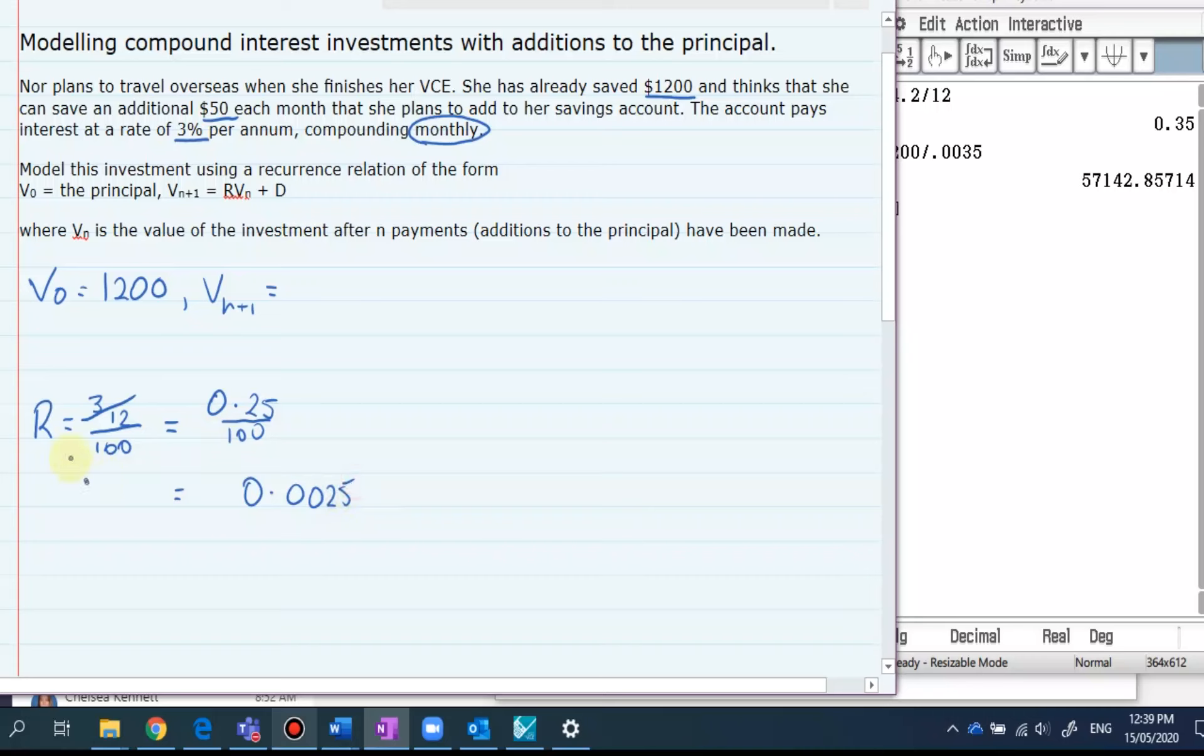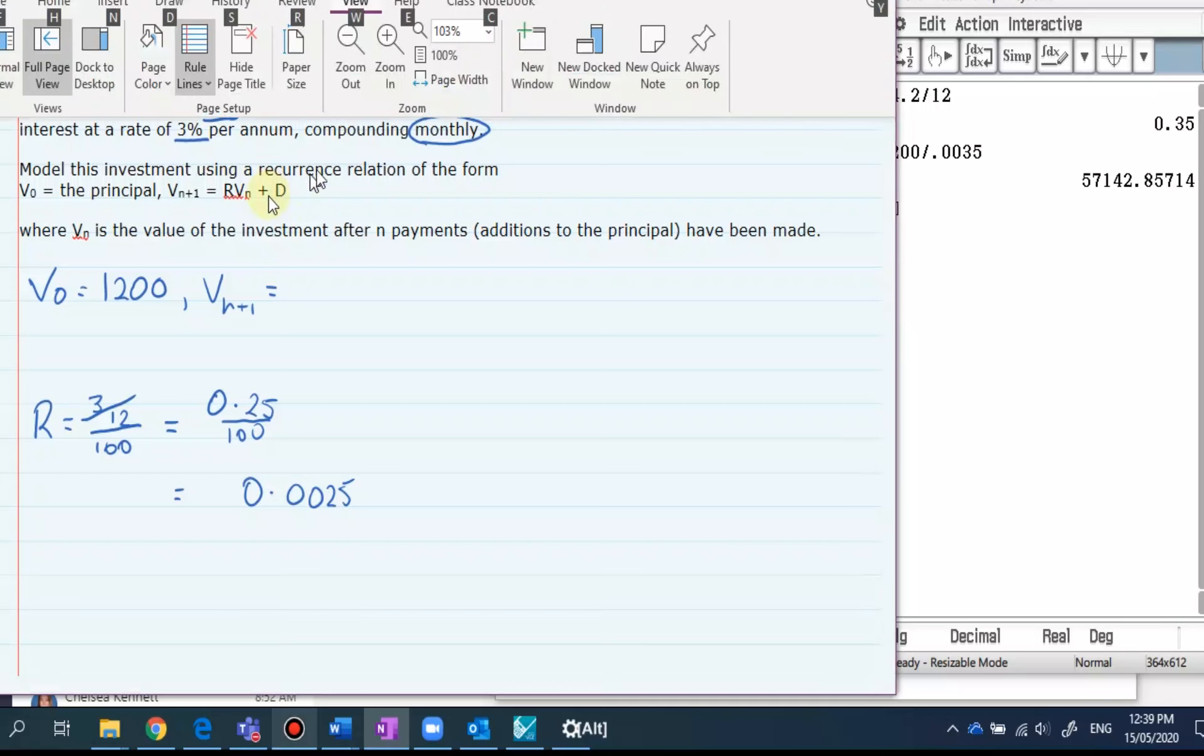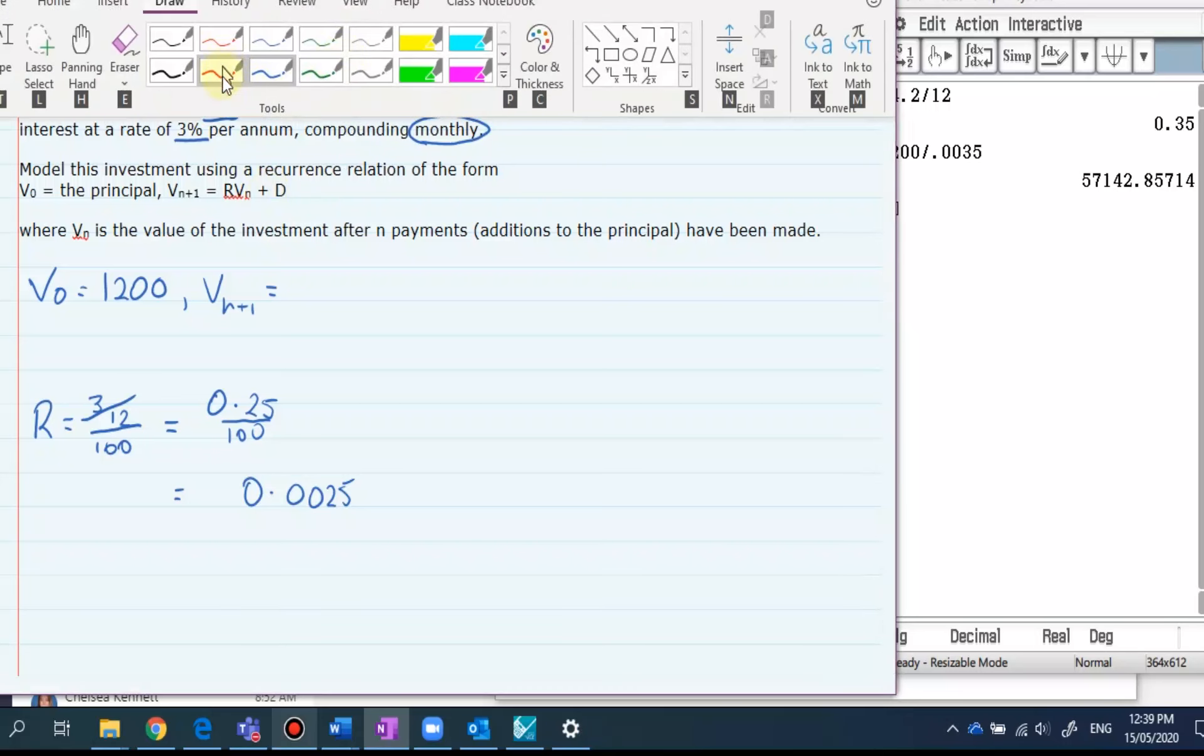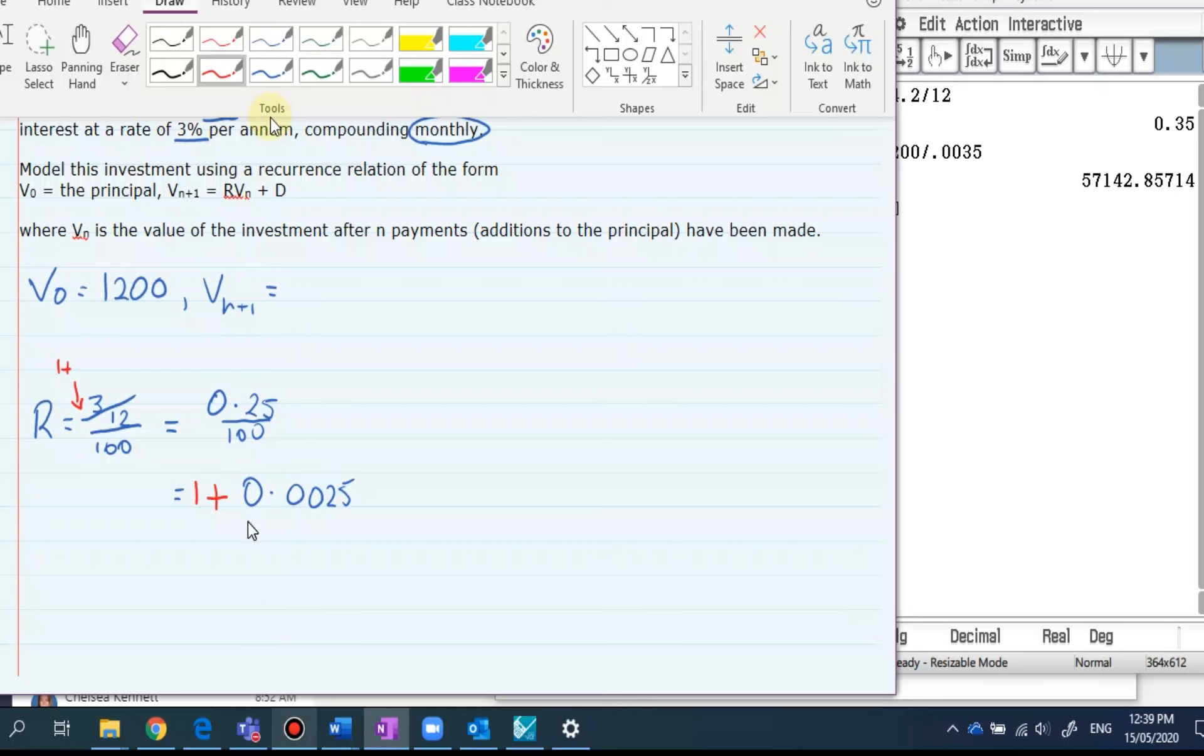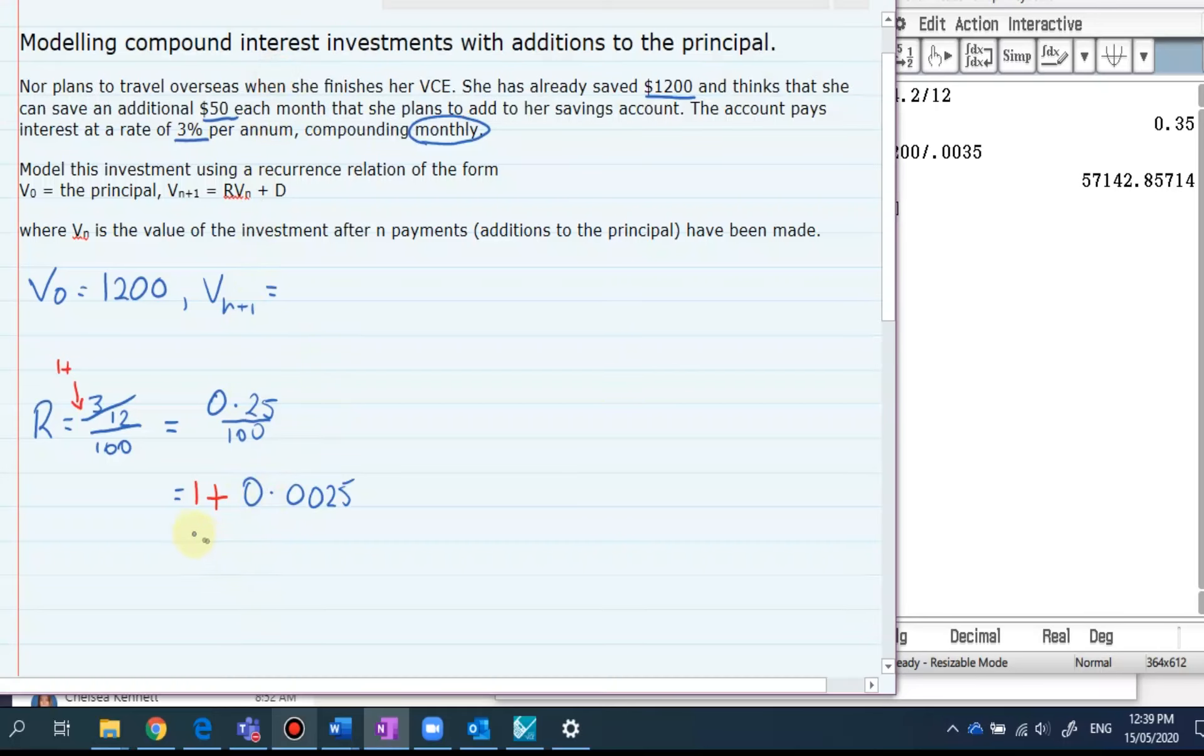Now this is going up okay so the thing that I didn't put in there which I probably should have initially is in here we need to put in our 1 plus. Okay so I'll pop that in there put it in red just to make a note of it make that look like a plus and not some weird Cartesian plane and go back up to my blue. So we've got 1.0025 as our R value so 1.0025.